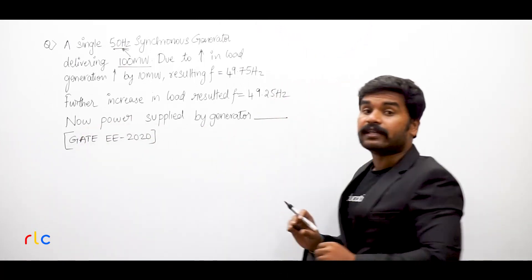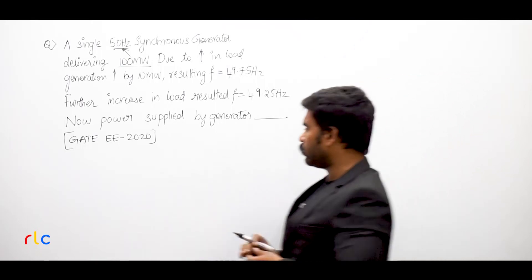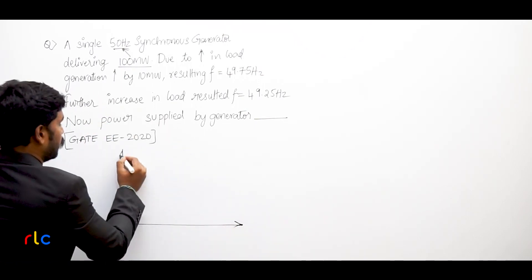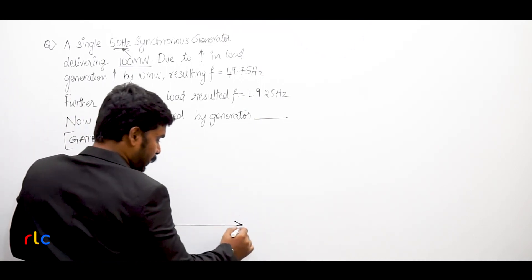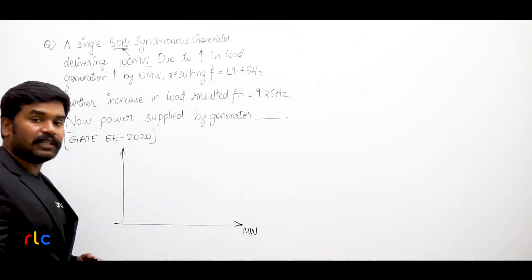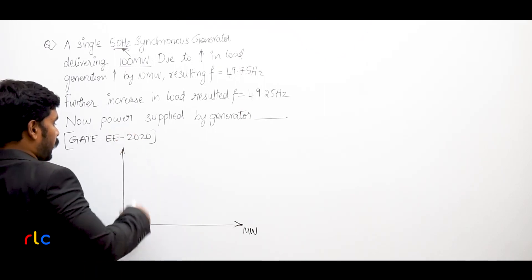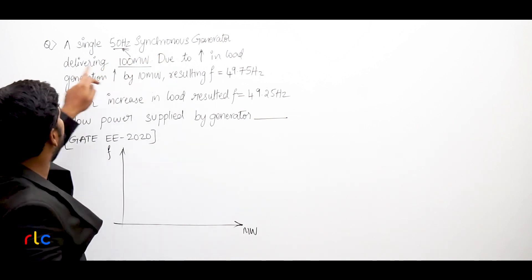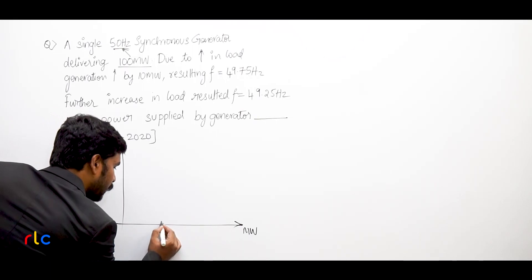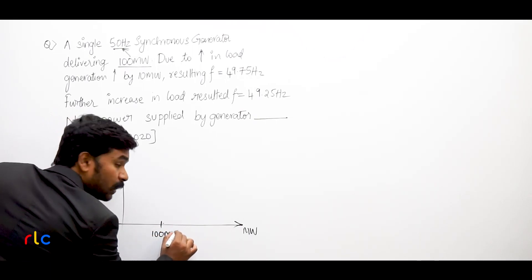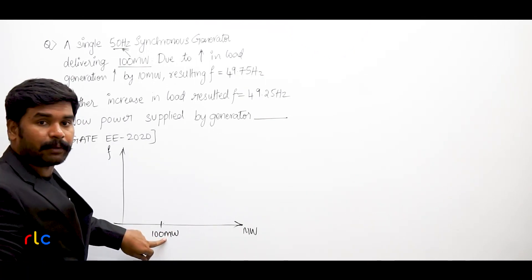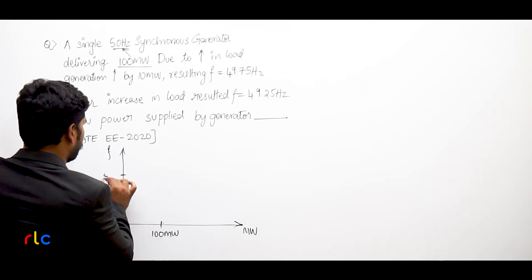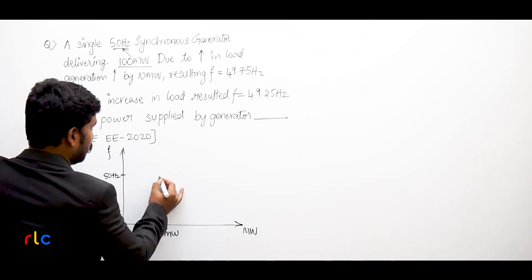Now, regarding the power supplied by the generator, we can draw a load-frequency curve. In this curve we take the megawatt load supplied by the generator on one axis and the frequency on the other. When the synchronous generator delivers 100 megawatt, the frequency is 50 Hz — so 100 megawatt corresponds to 50 Hz on this curve.